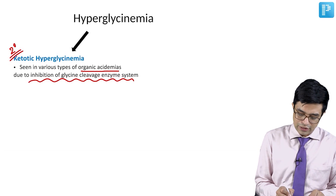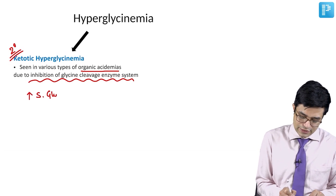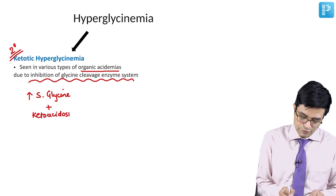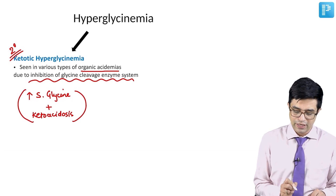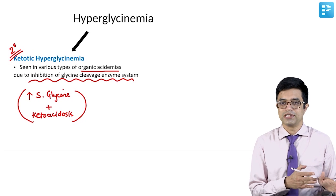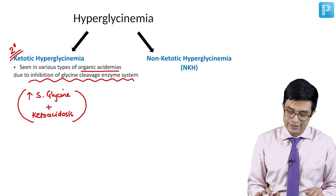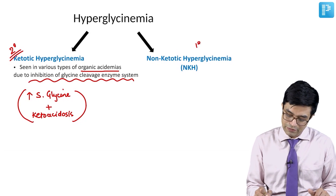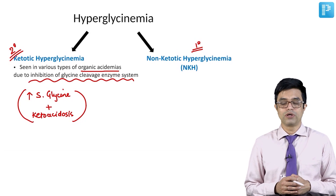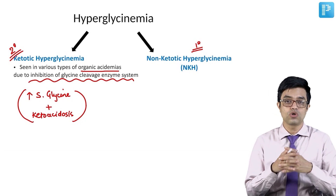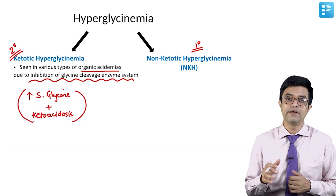Ketotic hyperglycinemia is so called because increased serum glycine levels are always accompanied by ketoacidosis — both ketosis and acidosis are present. Management primarily involves treating the underlying organic acidemia. The second variety, non-ketotic hyperglycinemia, is also called primary hyperglycinemia, and this is the one considered a true inborn error of metabolism related to glycine that is important for exams.